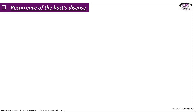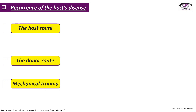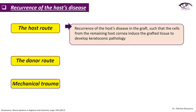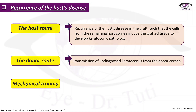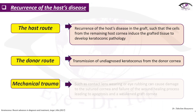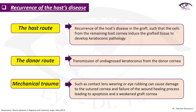There can also be recurrence of the host disease after corneal graft, caused by host factors, donor factors, or mechanical trauma. In the first case, cells from the remaining host cornea induce the grafted tissue to develop keratoconic pathology. Donor recurrence may result from transmission of undiagnosed keratoconus from the donor cornea. Mechanical trauma such as contact lens wear or eye rubbing can damage the sutured cornea and impair wound healing, leading to apoptosis and weakening of the graft cornea.